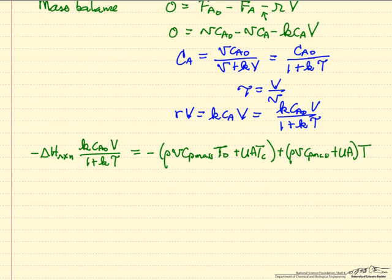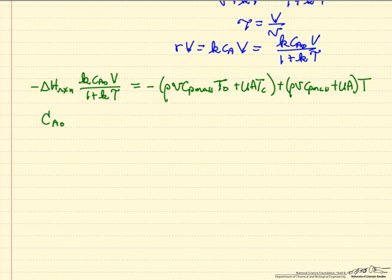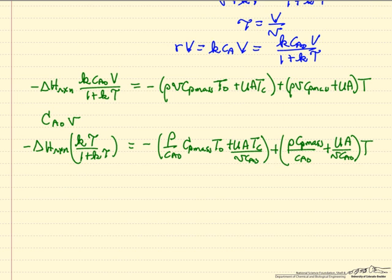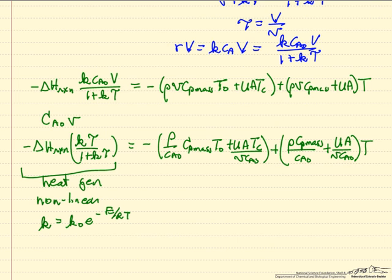So this is the energy balance with the substitution and just a slight rearrangement of the terms on the right side. Now just for convenience, I am going to divide both sides by CA0 times the volumetric flow rate. So I now have the energy balance rearranged. Remember this is a heat generated term. If we plot this versus temperature, it is going to be non-linear because the rate constant would be some pre-exponential factor times an exponential of activation energy divided by the gas constant times temperature.